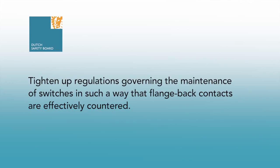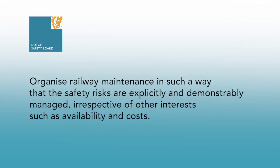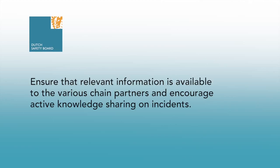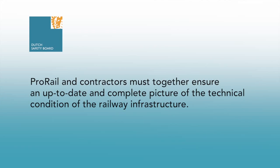On the basis of its investigations, the Dutch Safety Board has issued the following recommendations: Tighten up regulations governing the maintenance of switches in such a way that flangeback contacts are effectively countered. Organise railway maintenance in such a way that the safety risks are explicitly and demonstrably managed, irrespective of other interests such as availability and costs. Ensure that relevant information is available to the various chain partners and encourage active knowledge sharing on incidents. ProRail and the maintenance contractors must together ensure an up-to-date and complete picture of the technical condition of the railway infrastructure.